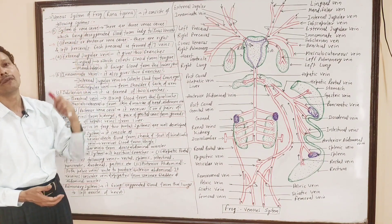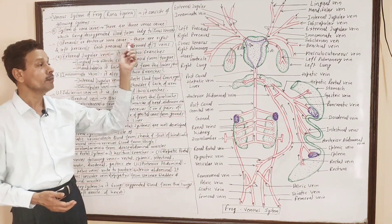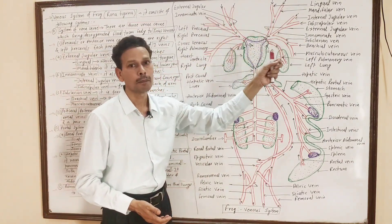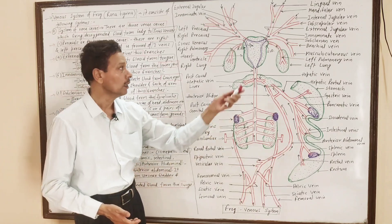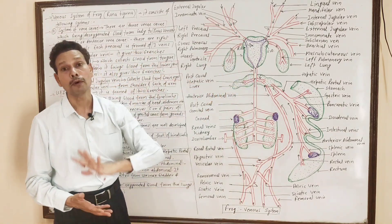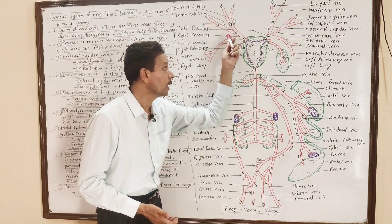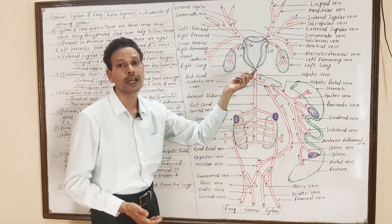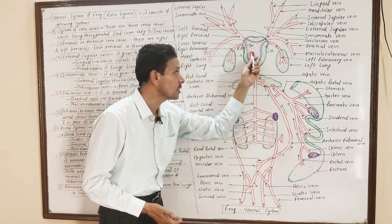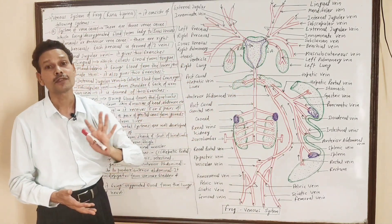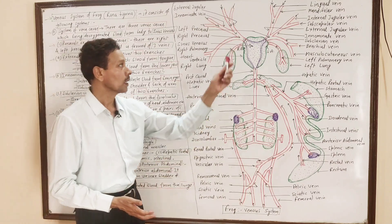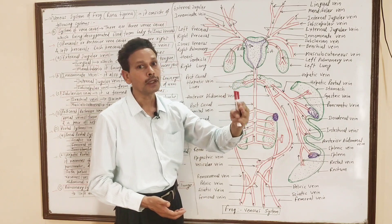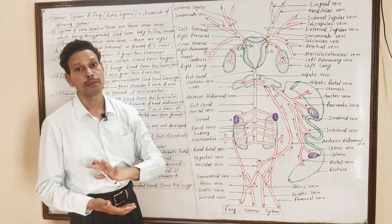First is the system of Vena Cava. It is formed by three Vena Cavas: right and left pre-cavals (or Vena Cava), and the third one is posterior Vena Cava or post-caval. All three — right, left pre-cavals, and the posterior Vena Cava post-caval — open into the additional chamber called sinus venosus. Each pre-caval is formed by the union of three large blood vessels.